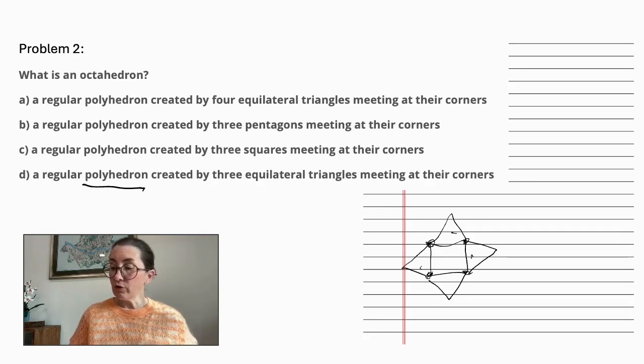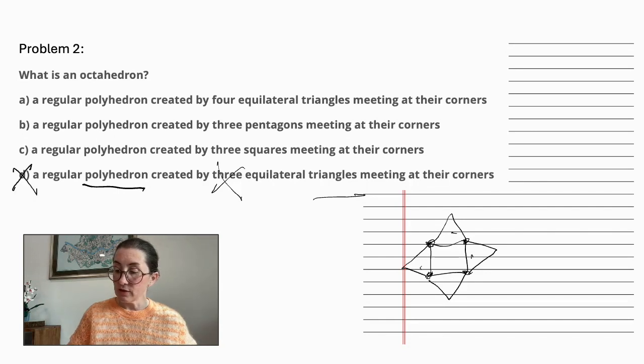A regular polyhedron created by three equilateral triangles meeting at their corners. Triangles is the correct shape, but it's 4, not 3, so this is not the correct answer. A regular polyhedron created by three squares meeting at their corners. Again, not squares and not 3, so not the correct answer.